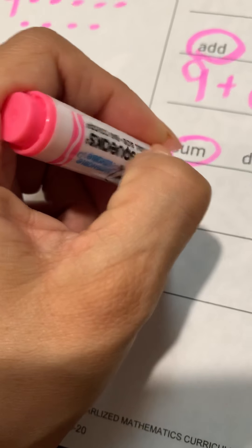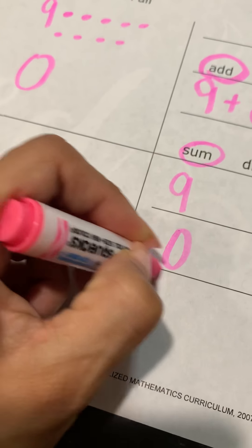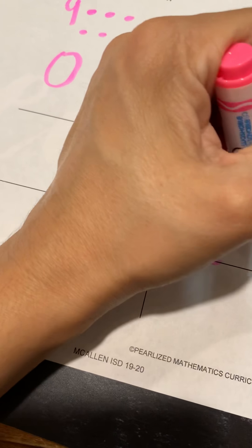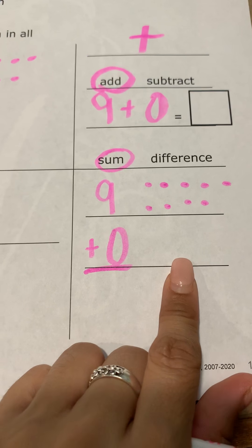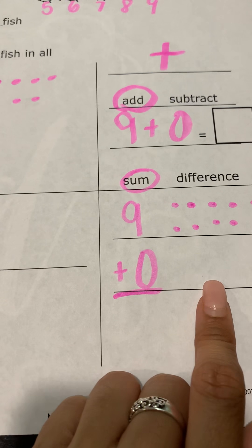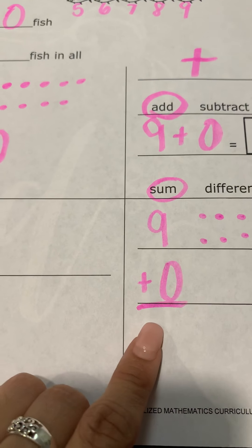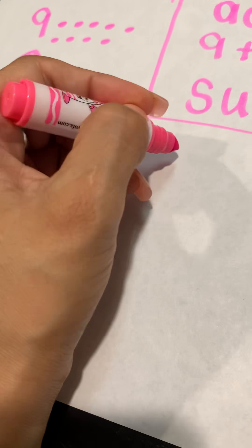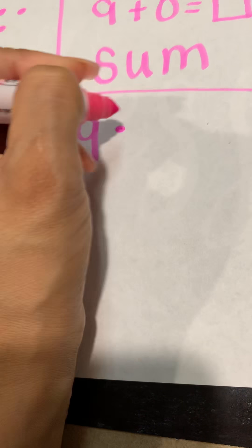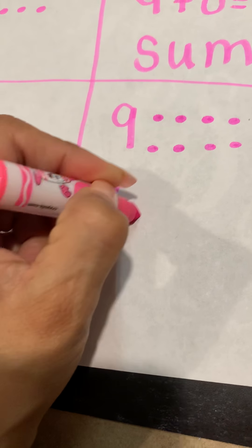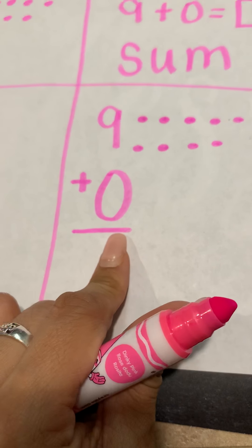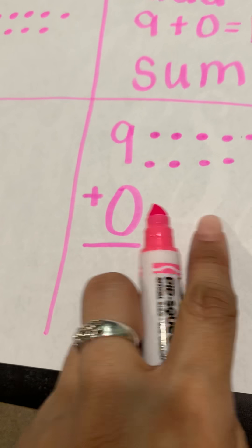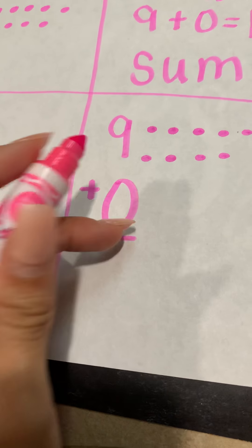Now we solve and justify. We write our equation: nine plus zero. We draw nine dots. Do we put anything for zero? No — because zero is nothing, it has no value. So nine plus zero is nine. We write nine in the solution box with nine dots, and our second addend is zero, so nothing there. Nine plus zero equals nine.